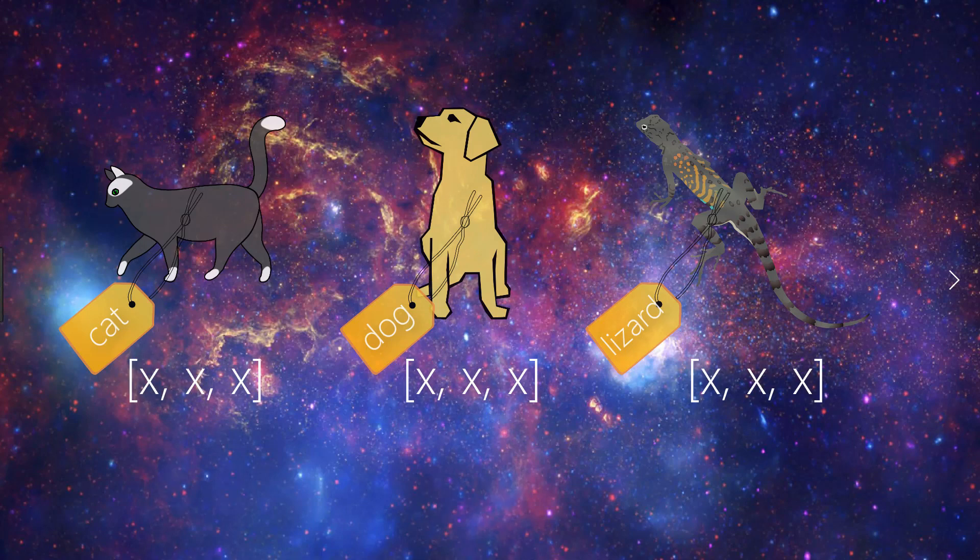Alright, so for one-hot encoding, we know the labels are transformed or encoded into vectors. We know that each of these vectors has a length that is equal to the number of output categories, and we briefly mentioned that the vectors contain zeros and ones. So let's go into further detail on this last piece.